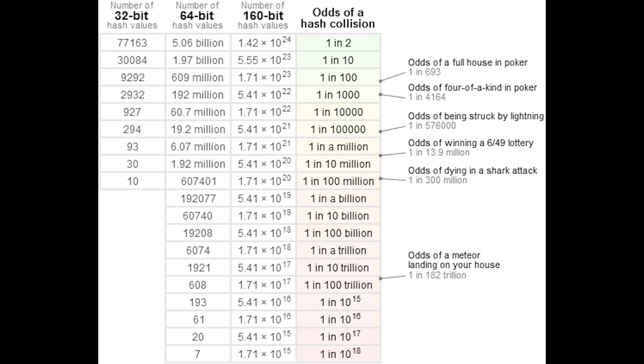Birthday attack is actually based on collision, so let's kill two birds with one stone. Birthday attack creates hash collisions. This is when two pieces of data in a hash table share the same hash value.